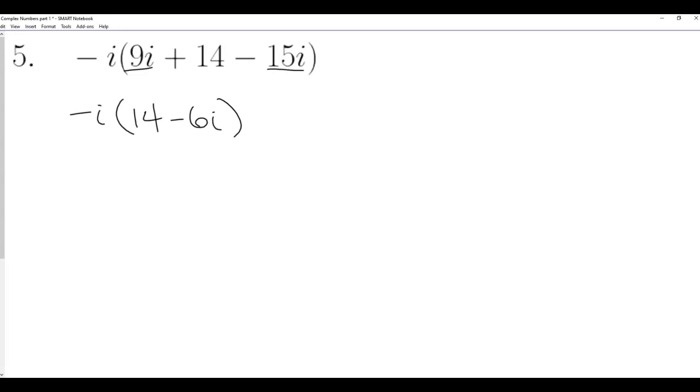Now distribute from the outside. Negative i times 14 is negative 14i. Negative i times negative 6i equals positive 6i squared. And i squared equals negative one, so we have 6 times negative 1, which is negative 6 for the real part, and negative 14i.